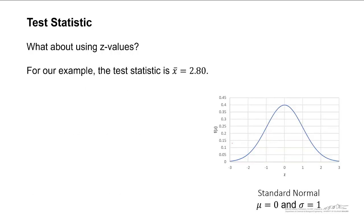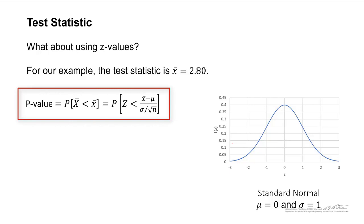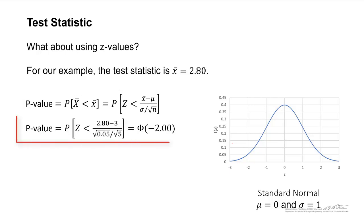We can also use z-values, we can take our test statistic of x-bar, we can convert that to a z-value by standardizing 2.80 minus our mean of 3, divide by sigma over root n, and we end up with the p-value is the cumulative frequency of the standard normal distribution up to negative 2.00. You can use z-tables or you can use Excel norm.s.dist and you get the same thing that we got before just using the norm.dist function, 0.02275.